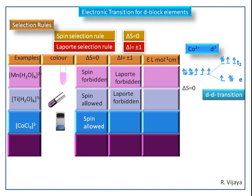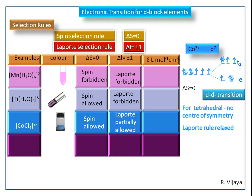Here, the complex is tetrahedral geometry, so we don't have a center of symmetry. So the Laporte selection rule is relaxed here, and it is a partially Laporte allowed transition. That's why this complex is somewhat dark in color, even though it is a D-D transition.